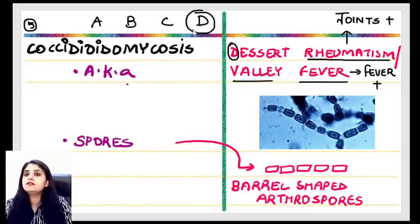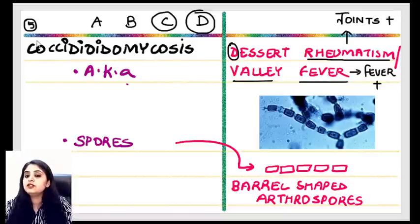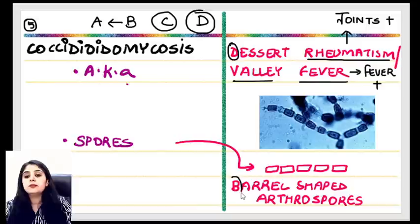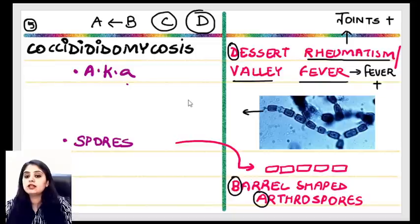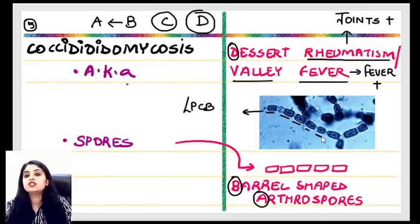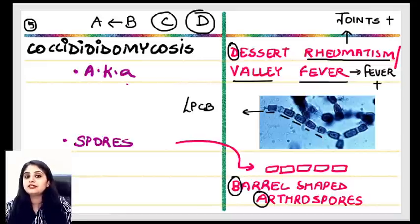Question: Cigar body is seen in — answer is Sporothrix schenckii, which shows both cigar body and asteroid body. Question: A 20-year-old archaeologist travels to Arizona, excavates ruins, and one month later develops flu-like illness with cough, muscle pain, fever, and lung involvement. Answer: Coccidioidomycosis — ABCD: desert history, barrel-shaped arthrospores, valley fever.